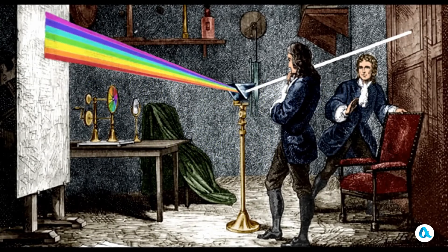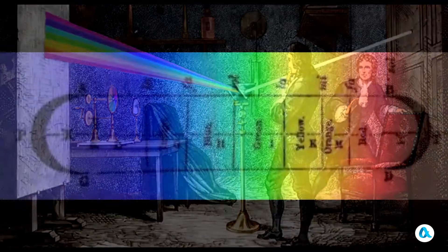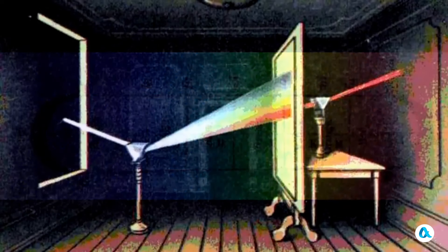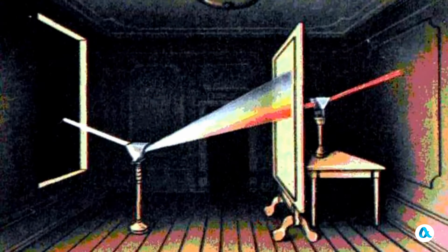The history of the physical study of color begins with Newton's experiments where he used a prism to break down white sunlight into the colors of the rainbow, or spectral colors. He also discovered that these colors are pure in the sense that with another prism it is impossible to break down any of these colors into other colors.